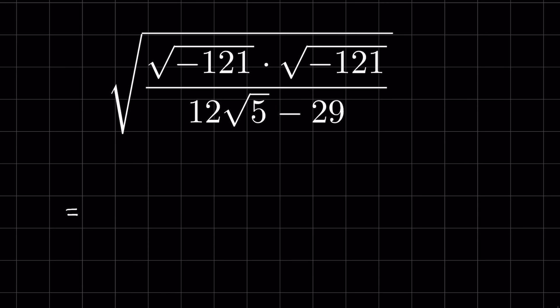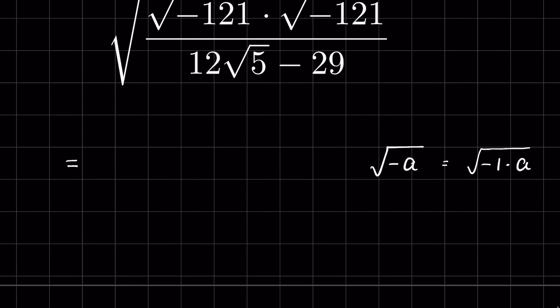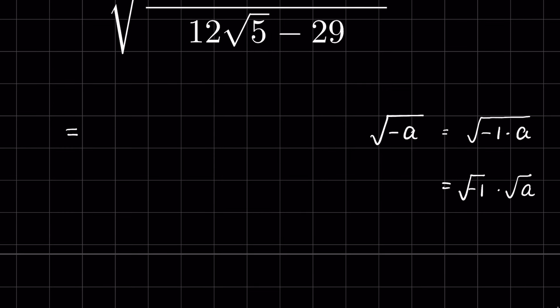Whenever there is a negative sign inside the square root, we write it as √(-1 × a) = √(-1) × √a. We denote √(-1) as i, so this equals i times √a.